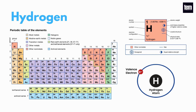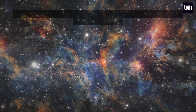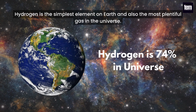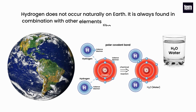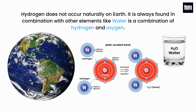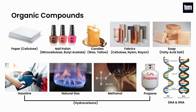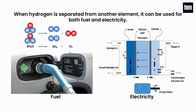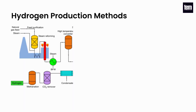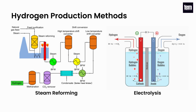Hydrogen is the first element of the periodic table with atomic number one, meaning it has only one electron in its atom. It is the simplest element on Earth and also the most plentiful gas in the universe. Hydrogen does not occur naturally on Earth; it is always found in combination with other elements, like water as a combination of hydrogen and oxygen. Hydrogen is also found in many organic compounds, notably the hydrocarbons that make up fuels such as gasoline, natural gas, methanol, and propane. When hydrogen is separated from another element, it can be used for both fuel and electricity.